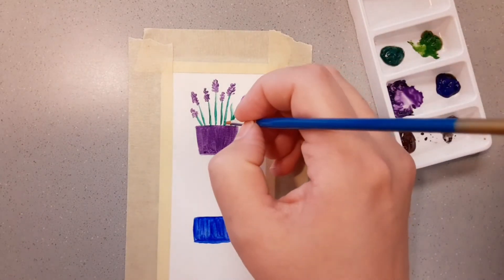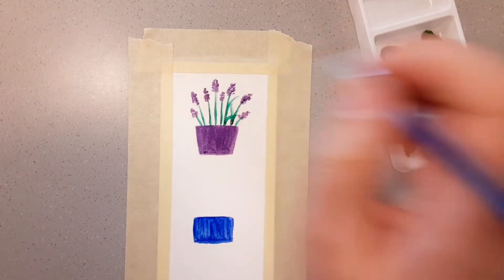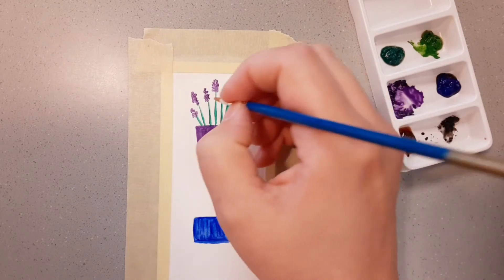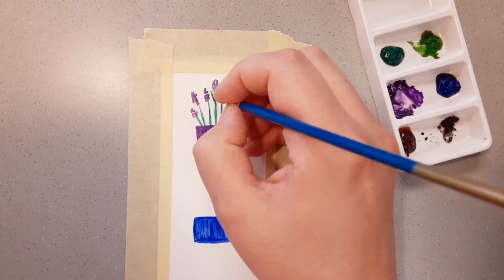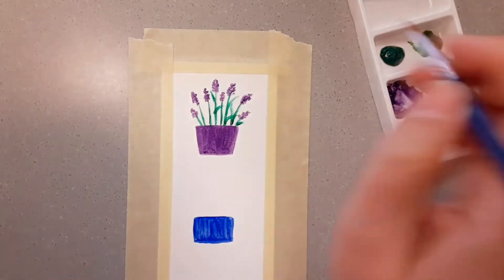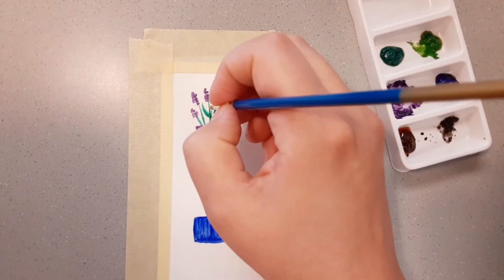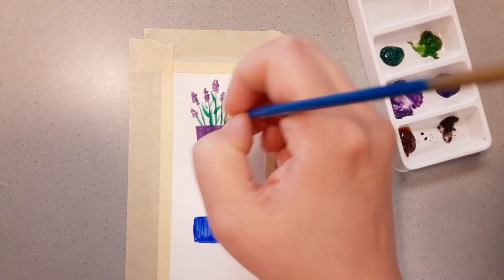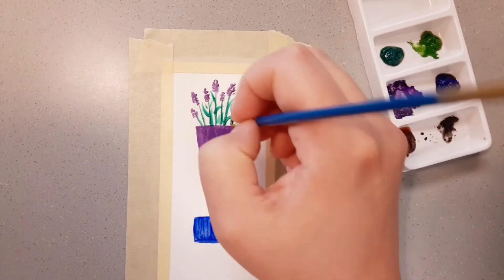Then I use the same green stem color to make leaves. Use the heaviest pressure at the bottom of your leaf and flick your brush upward using less pressure as you go up to get a nice flick shape. So hard pressure up into light.